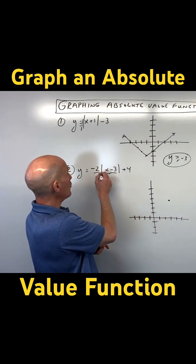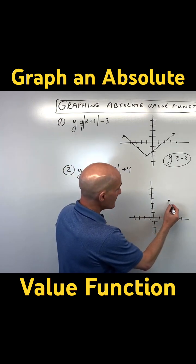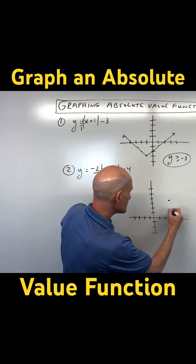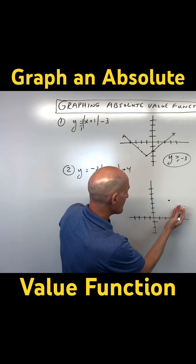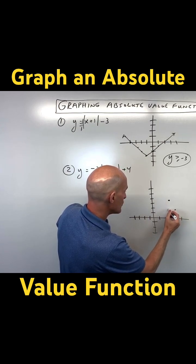And the negative 2, we can think of like the slope. That's like negative 2 over 1. So from here, I'm going to go down 2, 1, 2, and right 1, and I'm going to reflect it. So I could go down 2 and left 1.